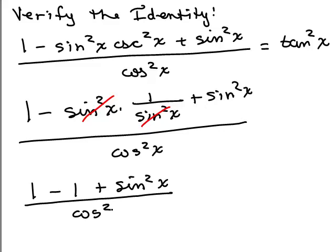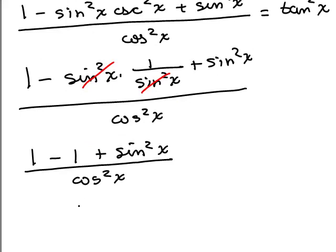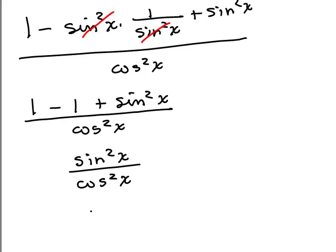Ooh, beautiful. So that's sine squared x over cosine squared x, which is what we want. Look at, we want tangent squared x. That's exactly what tangent squared x equals. Ta-da. We just showed that we can do it. Wasn't that nice to do one that wasn't so crazy difficult?